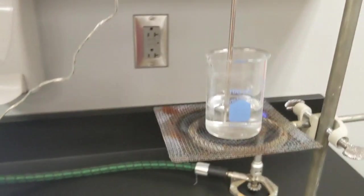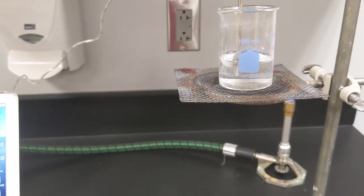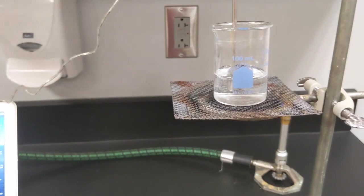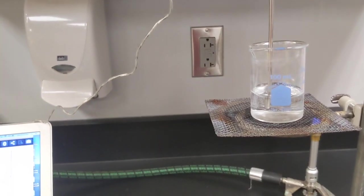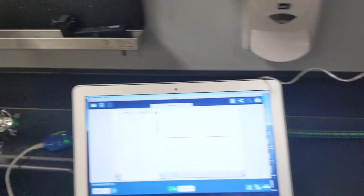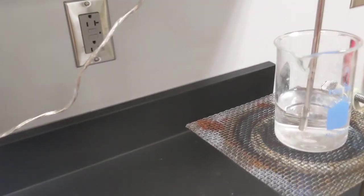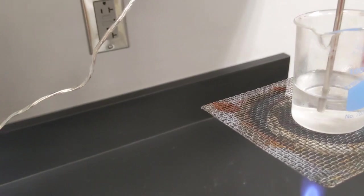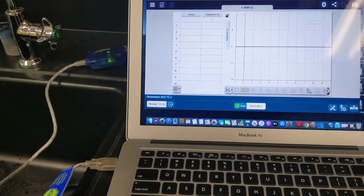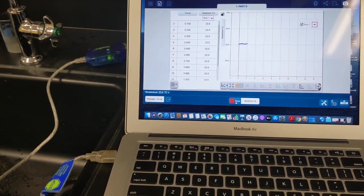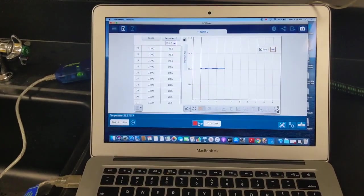So here's set up for part D. We went two centimeters above where we previously were at the tip of the flame. So we're going to be two centimeters above the flame. Everything's all set up. I'm going to put the flame underneath and then I'm going to hit start. And we'll come back in two minutes.